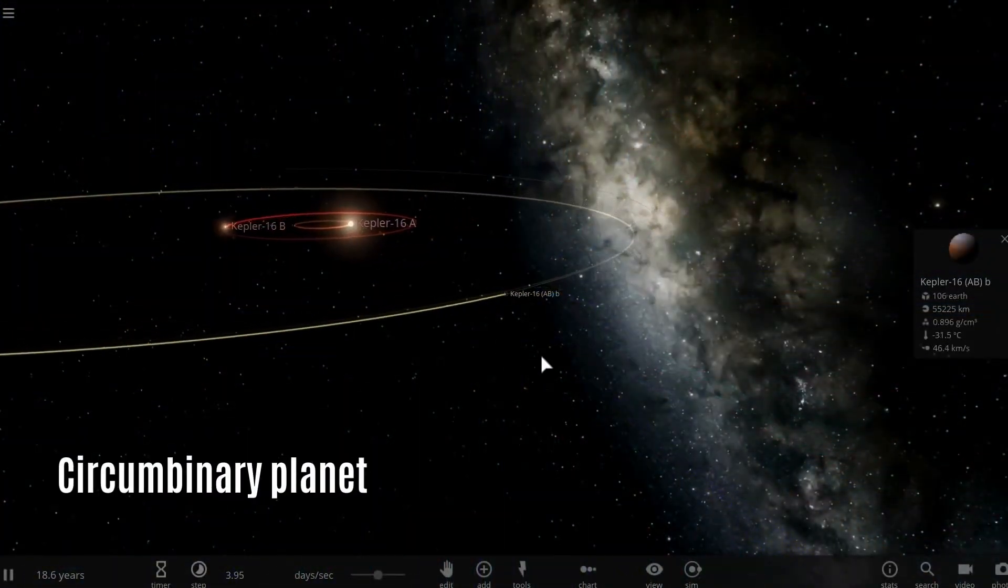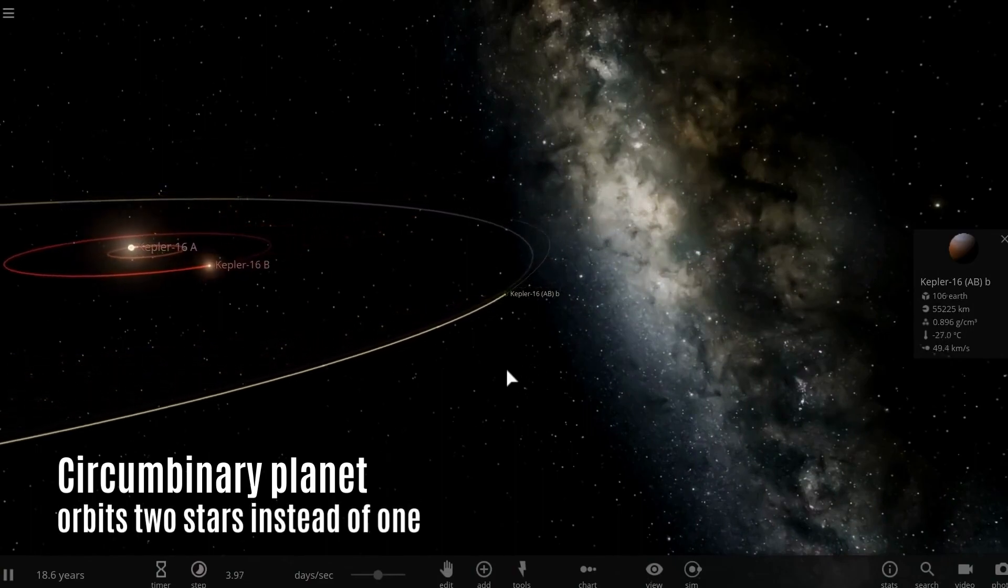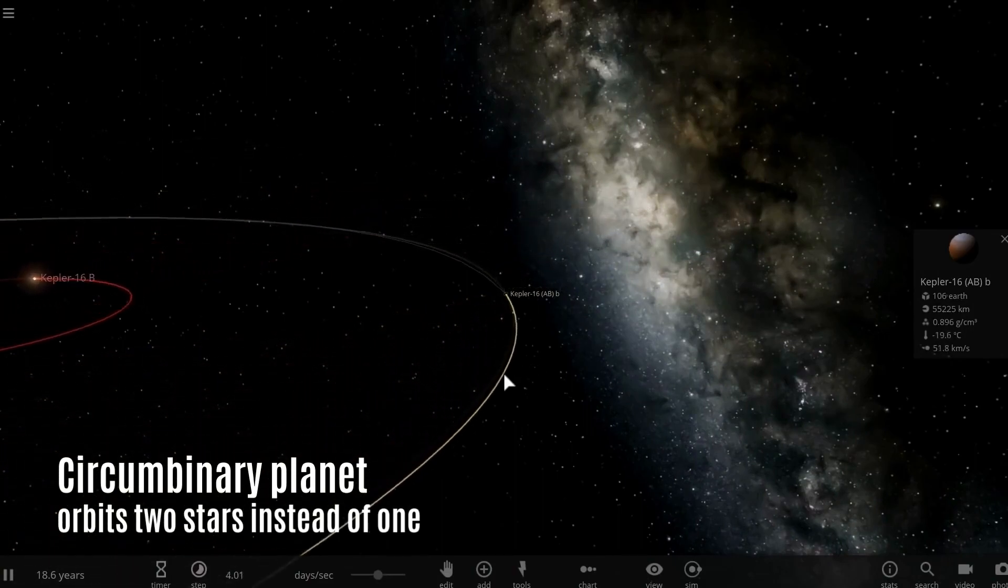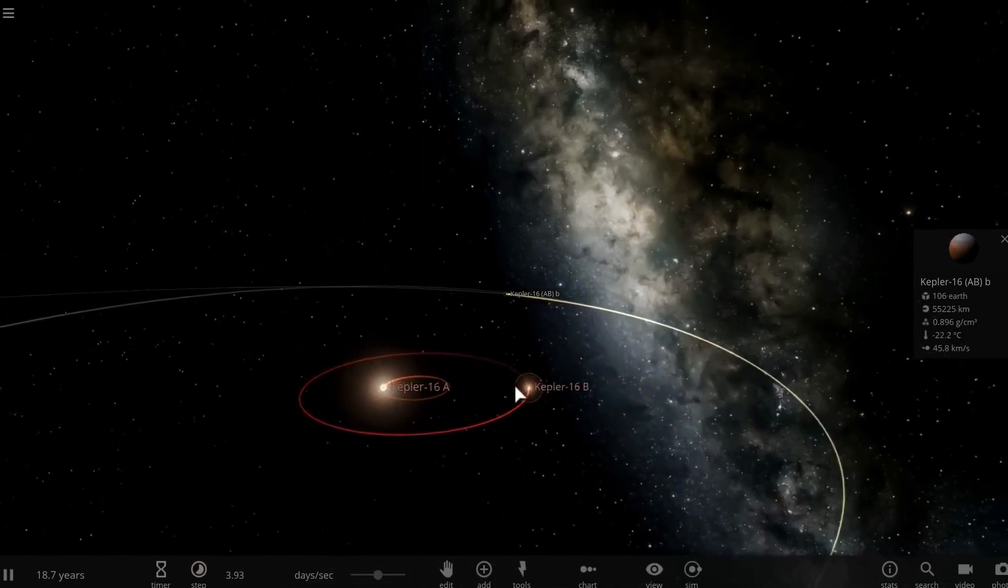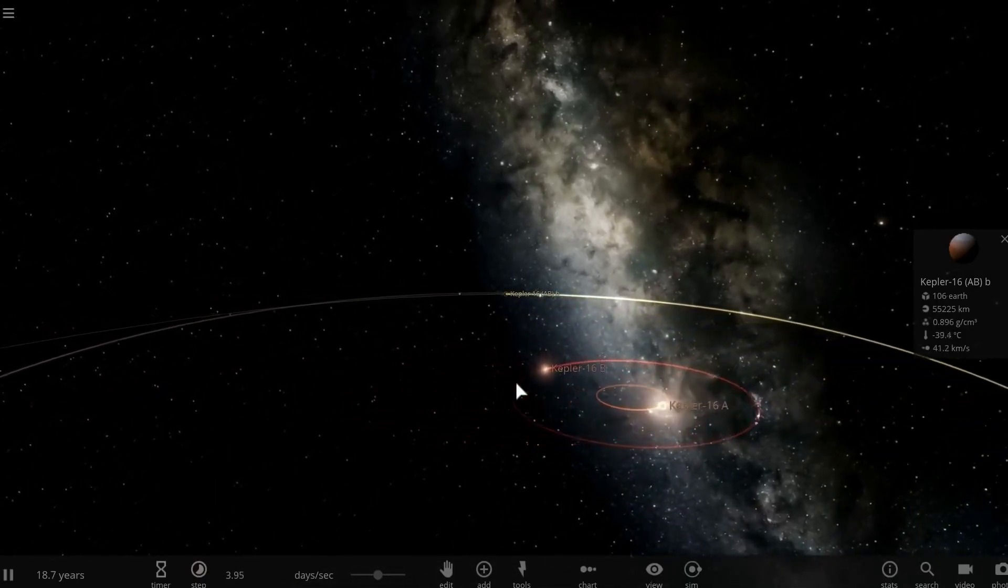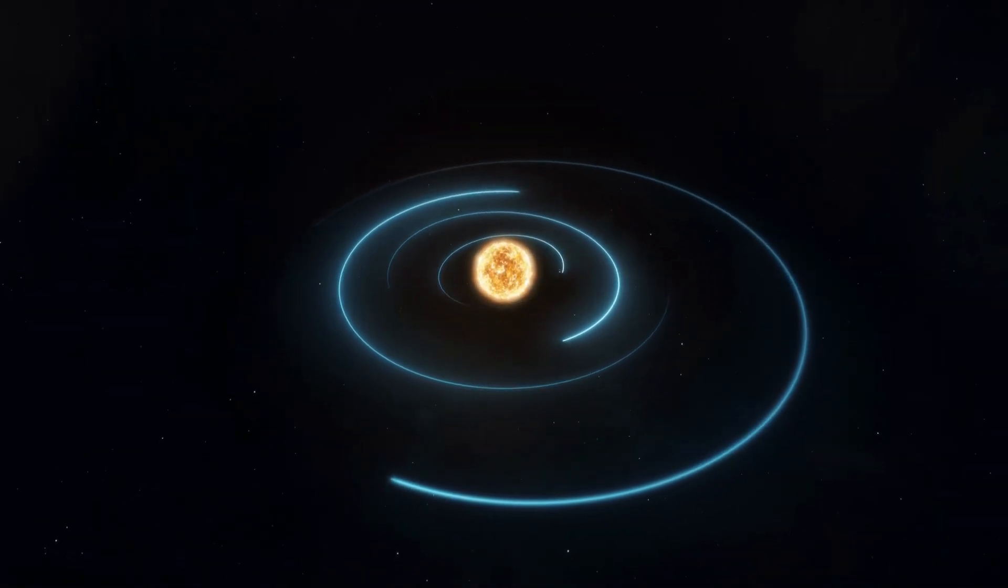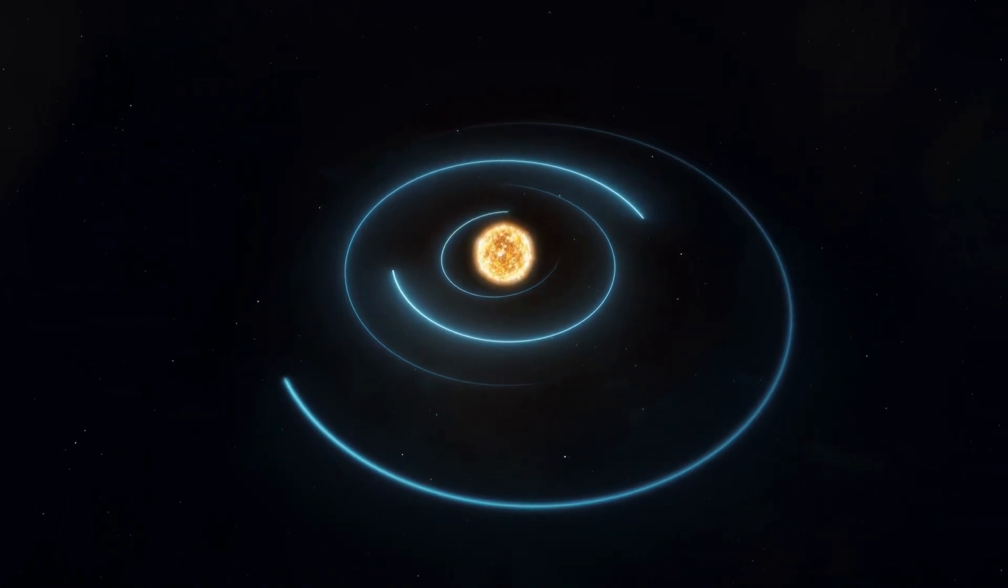Such planets can be original, circumbinary, captured, or the result of a second round of planet formation. The discovery of these exoplanets around a pulsar was groundbreaking at the time, as it challenged the conventional belief that planets could only exist around main-sequence stars like our Sun.